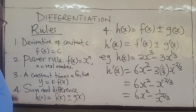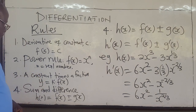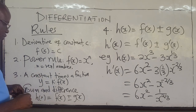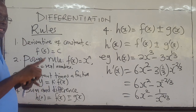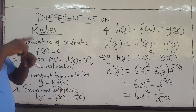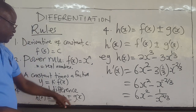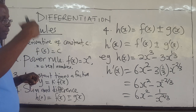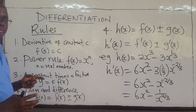These are 4 rules that you will apply a lot. In the next video, I'm going to cover two very important ones: the product rule, for when you have a product of two functions, and the quotient rule, for when you have a ratio of two functions.